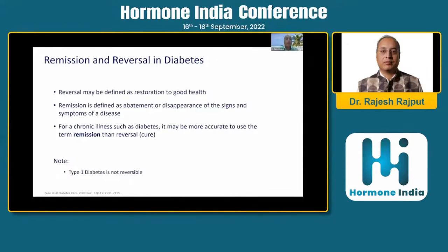What are the differences? Reversal is defined as restoration to good health, while remission is defined as abatement or disappearance of signs and symptoms of disease. For a disease like diabetes, which is a chronic disease, it may be more accurate to use the term remission than reversal, which actually means cure of the disease.